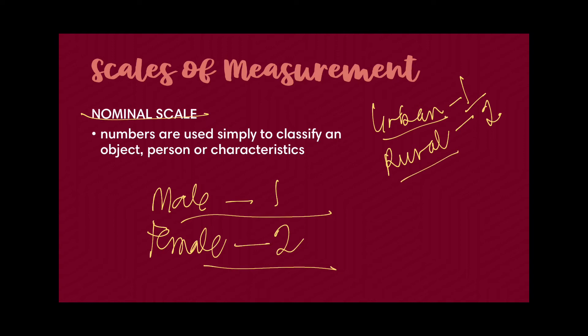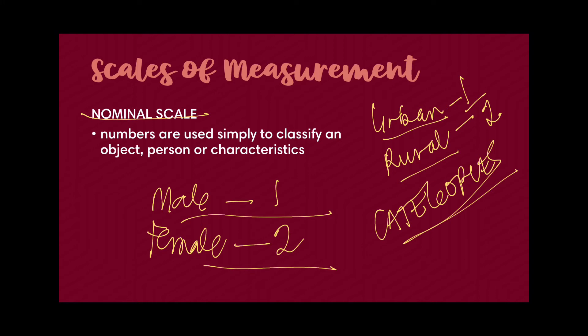Another example of a nominal scale is month of birth — January to December assigned values 1 through 12 — but it doesn't mean one month is better than another. When you think about nominal scale, think about categories instead of measurements. There is no form of ranking. That is the key indicator we're looking for in nominal scales.